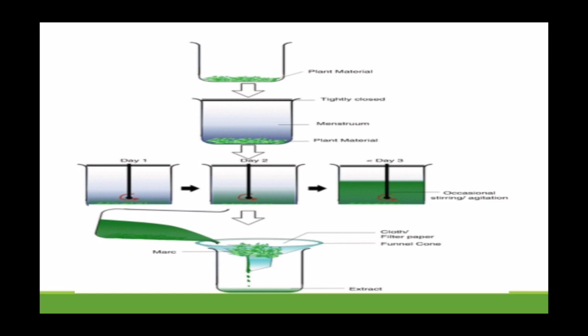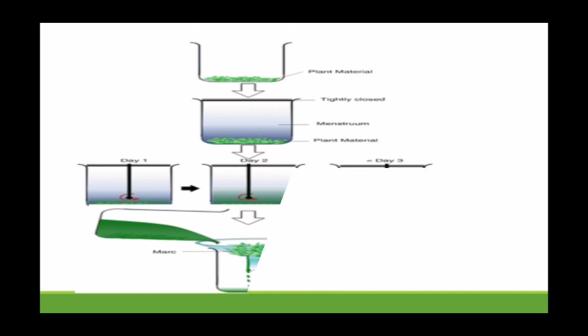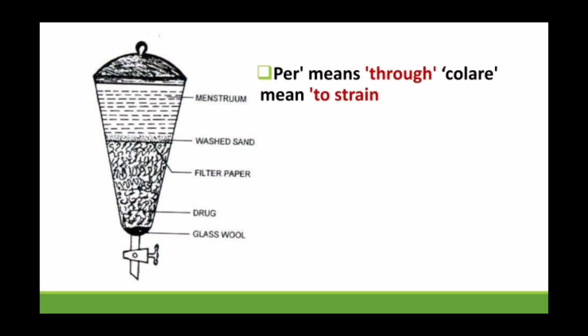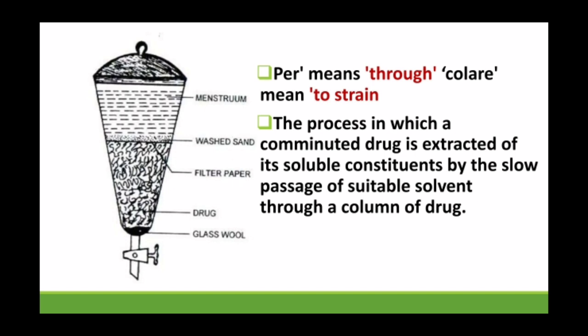This is the diagram of a percolator. 'Per' means through and 'colare' means to strain. Different layers are shown: the first layer contains menstruum, the second is washed sand, the third is filter paper, the fourth contains the crude drug, and the last is glass wool. There is a tap at the end from which the extract gets collected into a vessel.